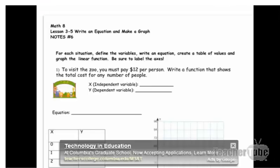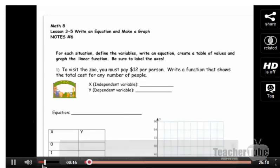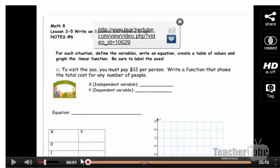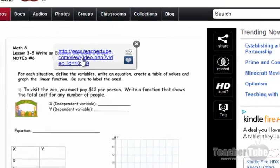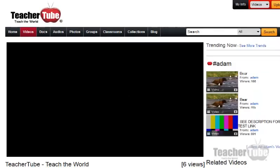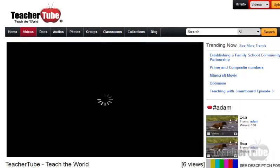And here, you will actually see the video start playing. Define the variables, write an equation, create a table of values, and graph a linear function. Be sure to label the axis. Go to 01, and then it'll actually stop because I stopped it at one second. And there's the link. So now, you can also put notes on there. But here's the link. You can click on the link, and it'll actually take me to the video that I shared that may be in more in-depth detail.